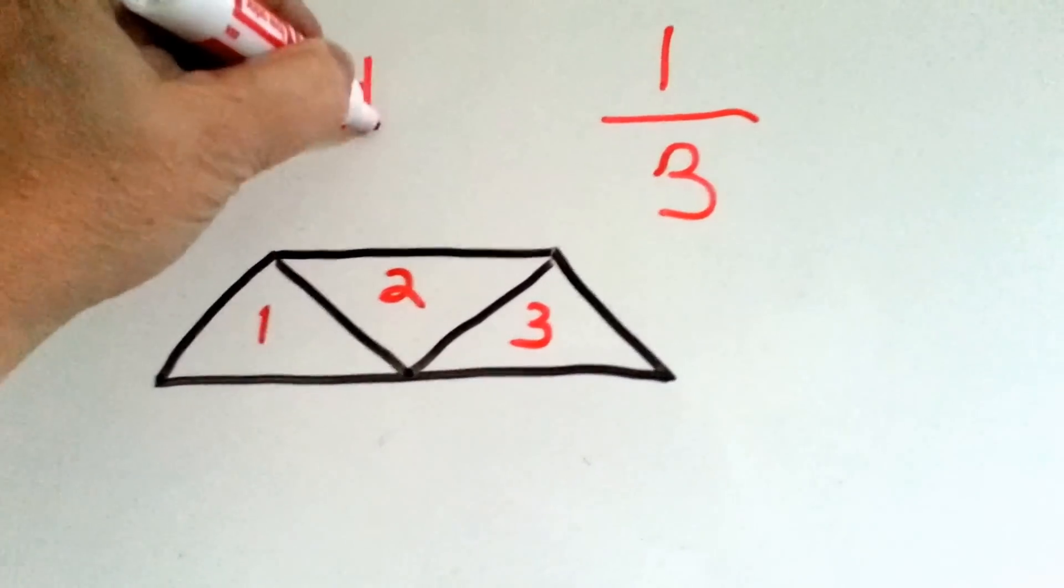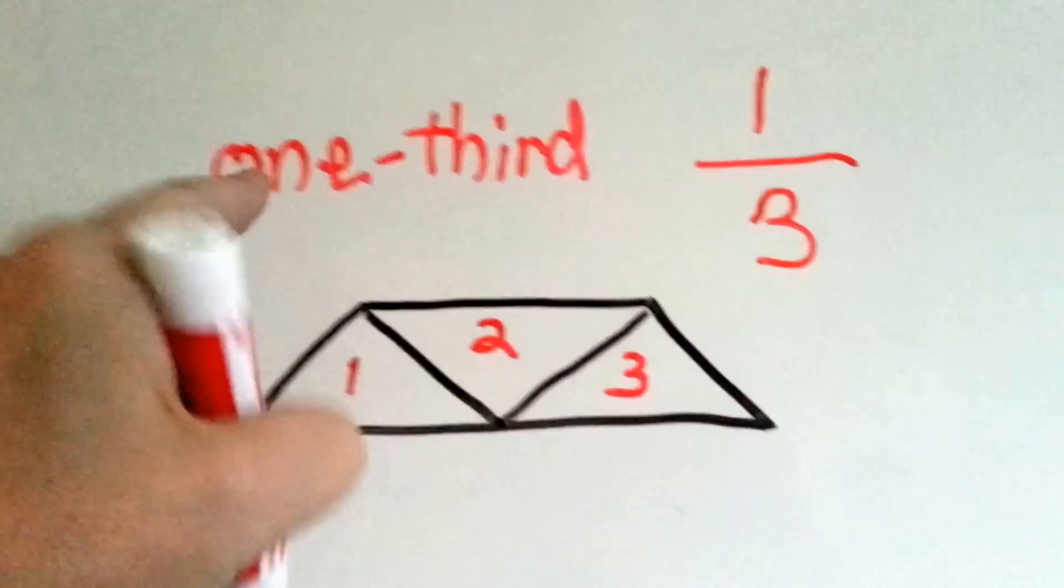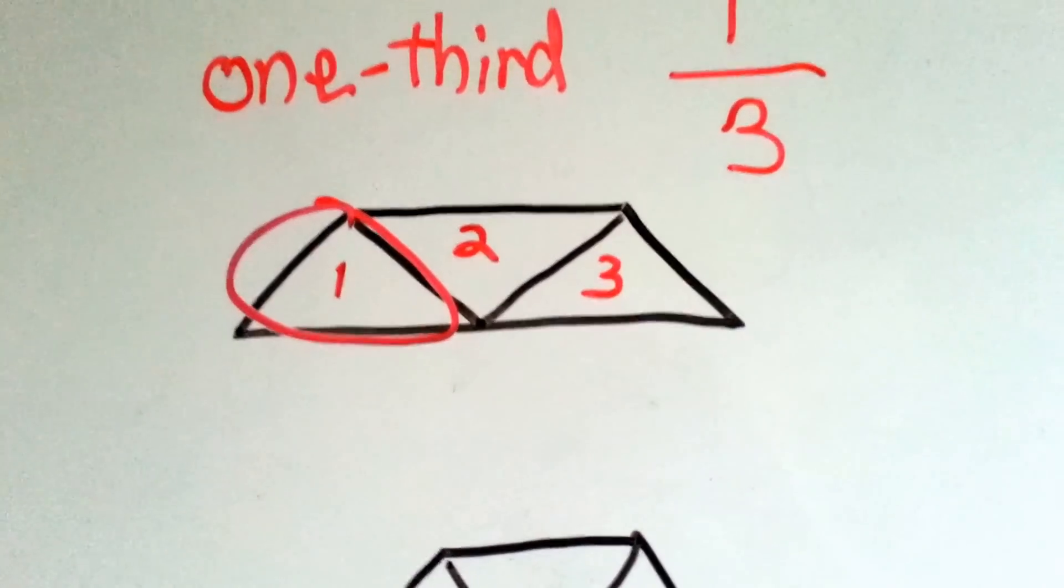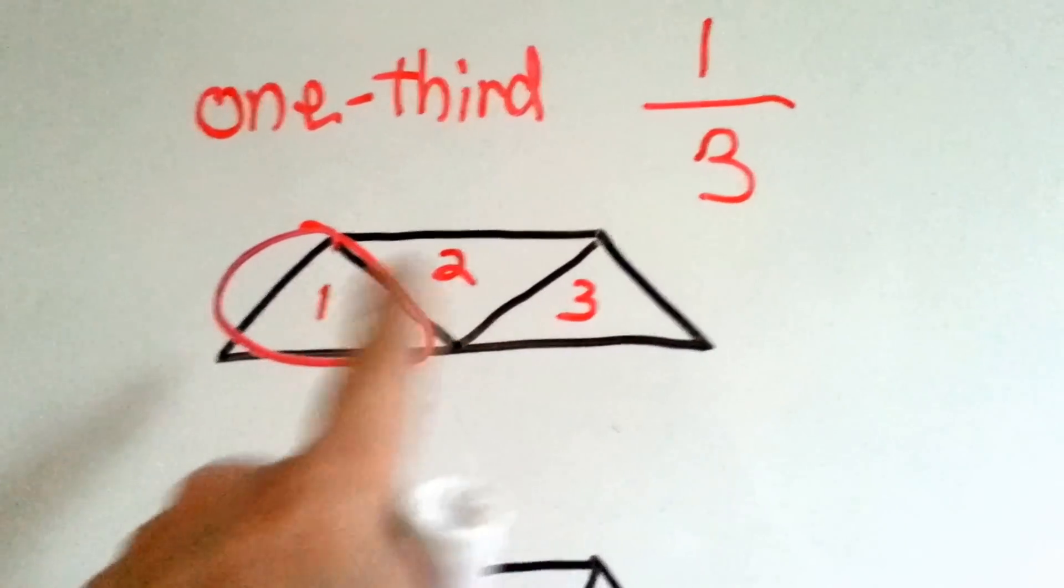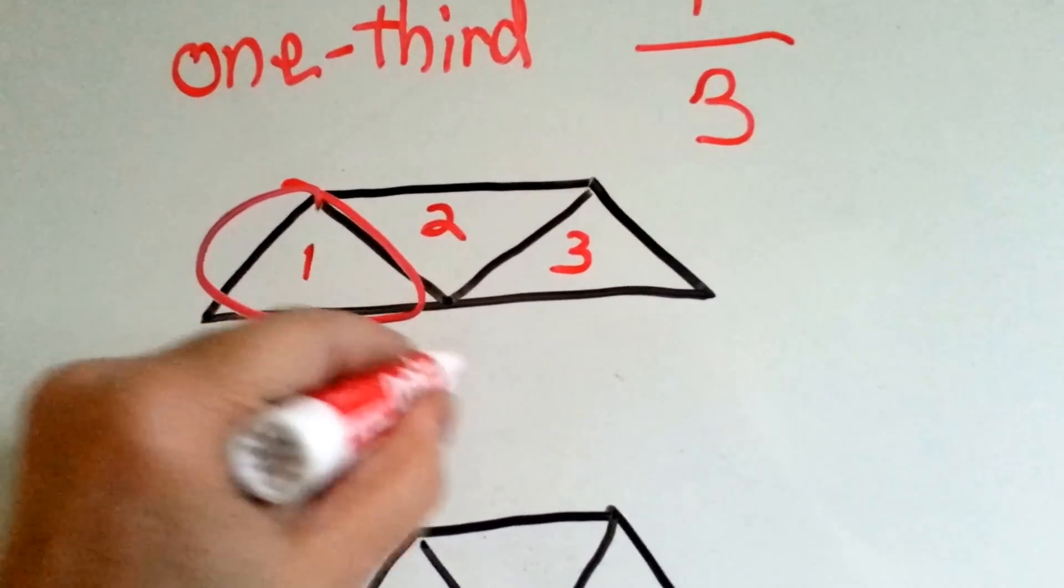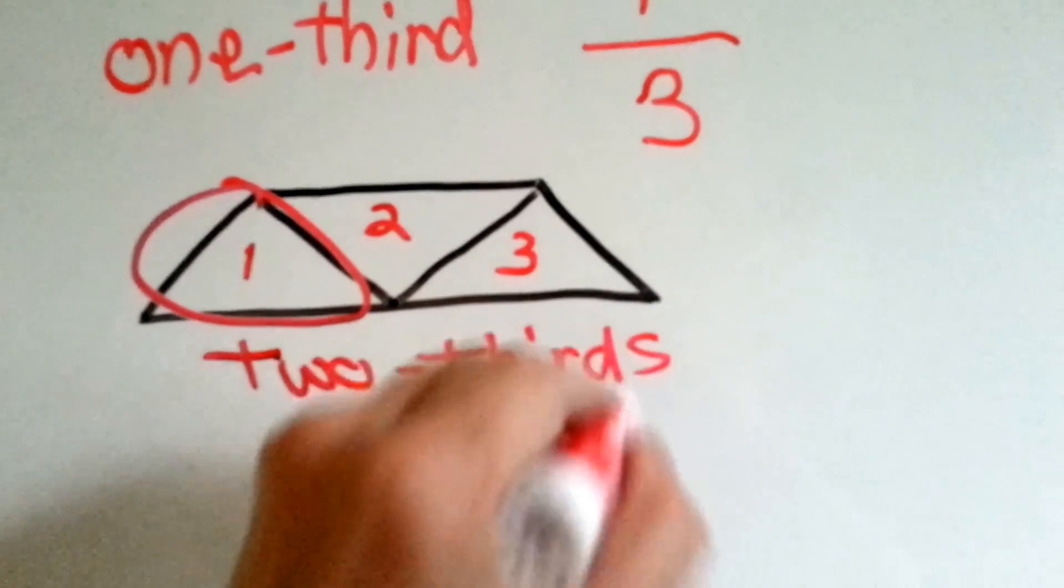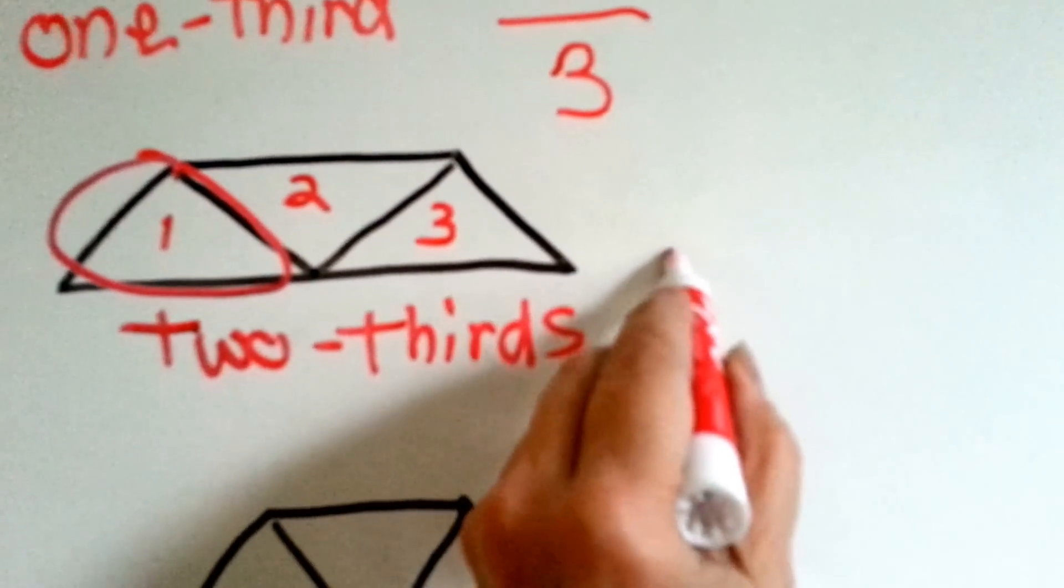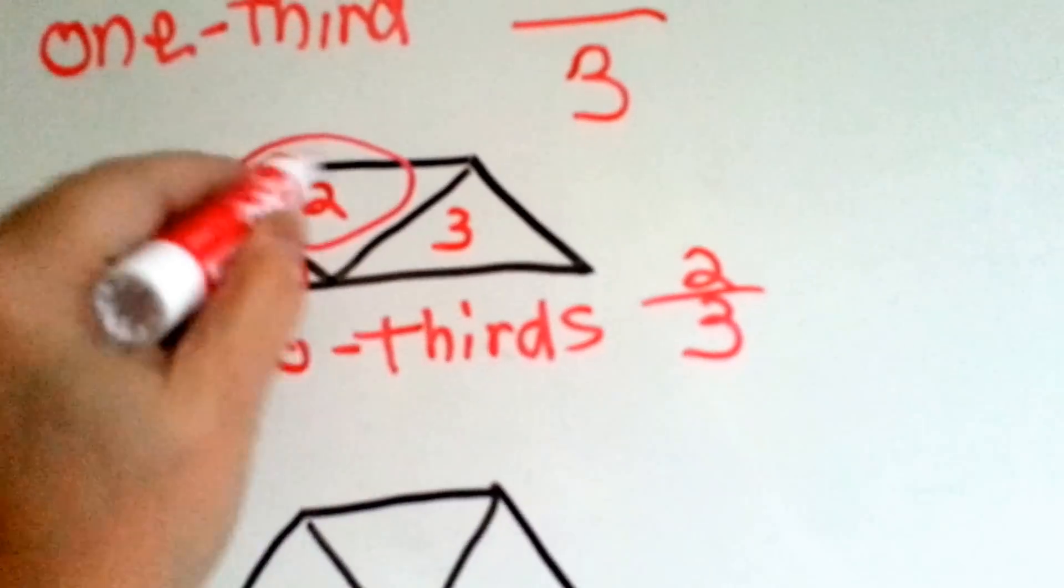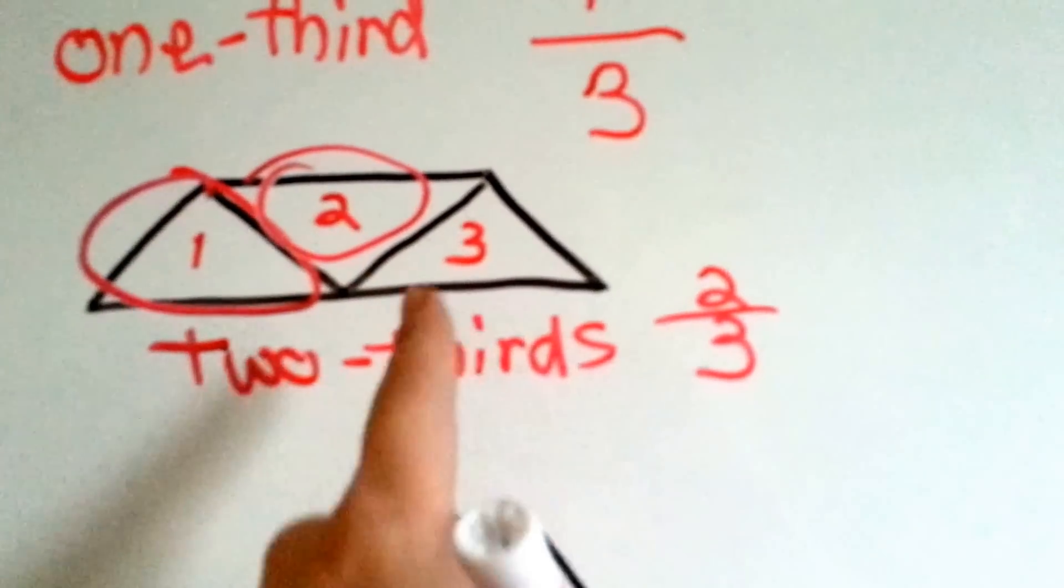It's like this. One third. That means you would eat one part. If you ate two of the parts, you would eat two thirds. And it would be like this. A two over the three. Because that means you got two parts of the three.